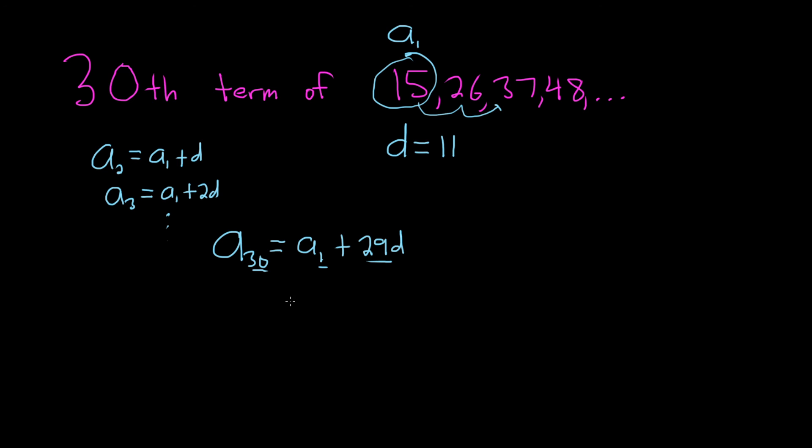Okay, so a sub 1 is 15, so this is 15, plus, and then 29, and then d is 11. So this is equal to 15,